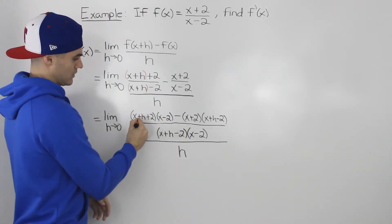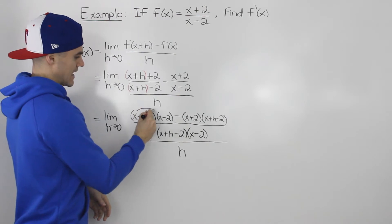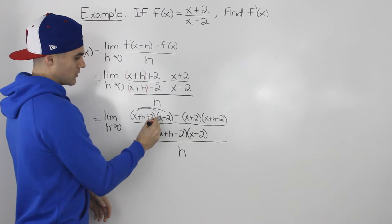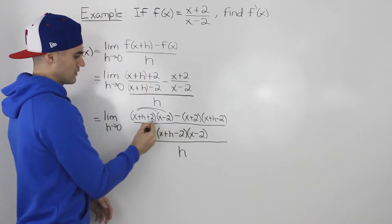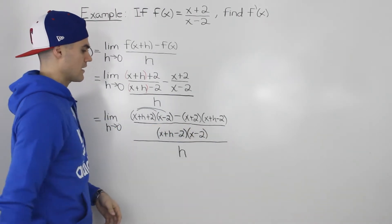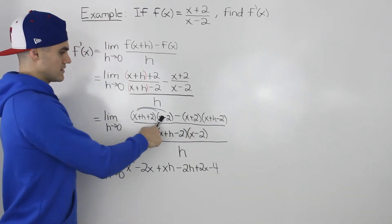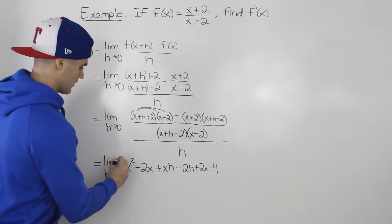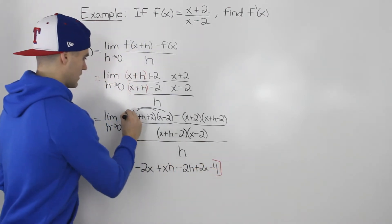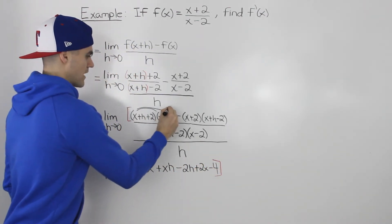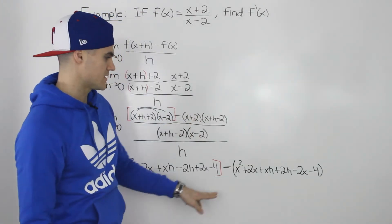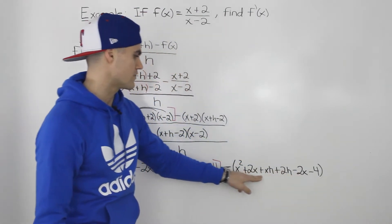When we multiply the first pair of brackets, x multiplies by x and -2, h multiplies by x and -2, and 2 multiplies by x and -2. That gives us the expanded first expression. Similarly, expanding the second pair of brackets gives us the second expanded expression.